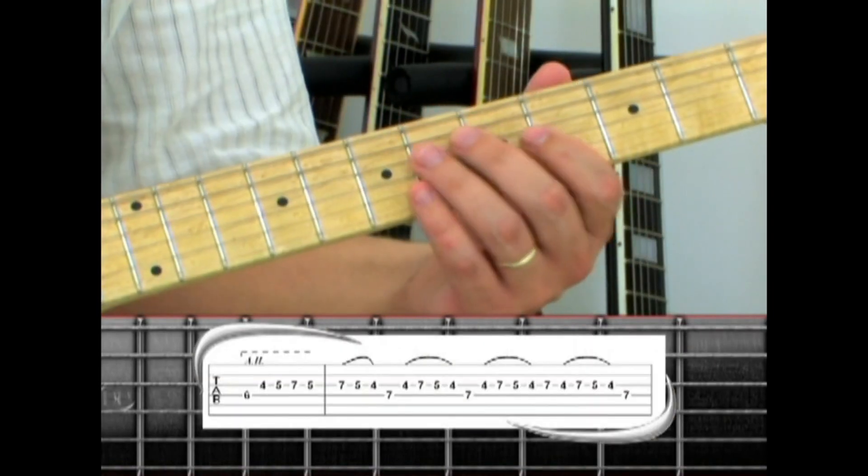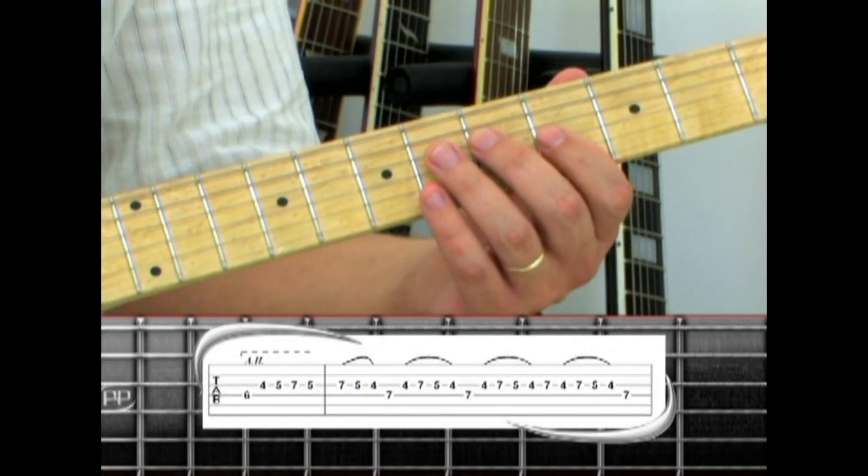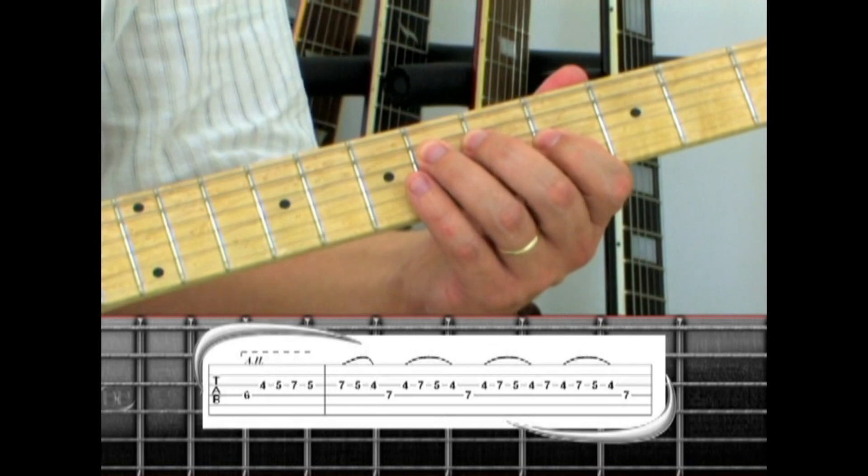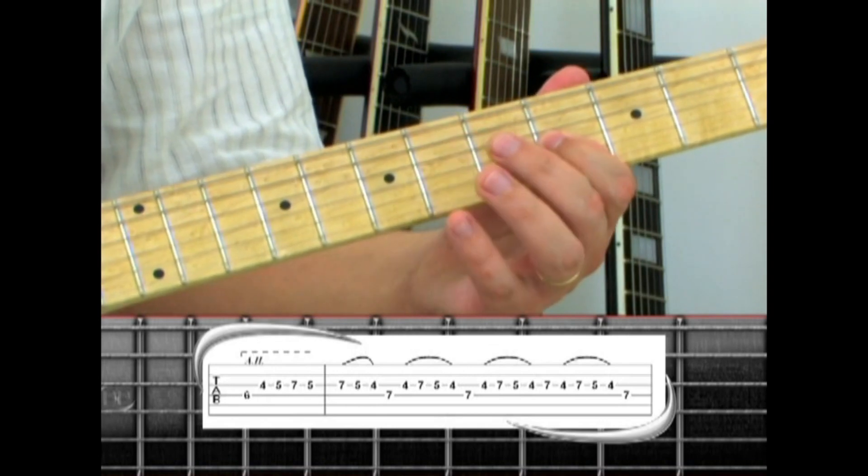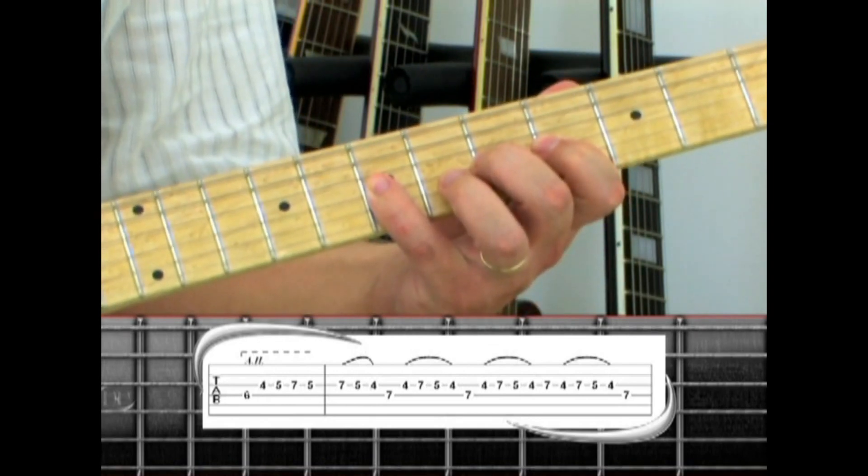Phrase three starts off with artificial harmonics. Play the fourth string six to third string four, five, seven, five.